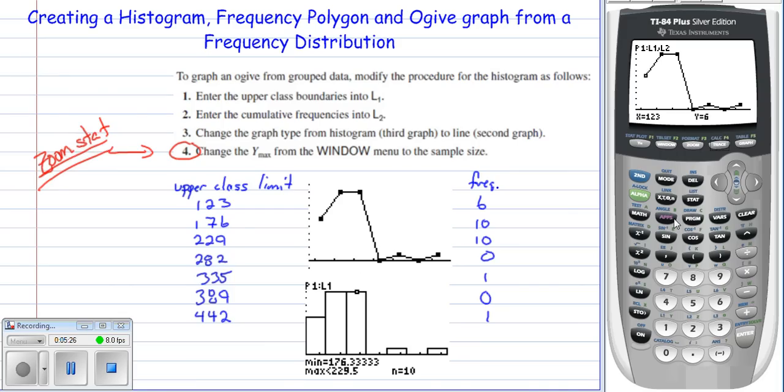All right, so that's the key thing there—it's really a matter of flavor. We can do the same thing here; we can hit the trace and it tells us 123, there's 6, and 176, and so forth. So they're just kind of another way to look at the upper limits of the classes and the frequency that's in those classes.